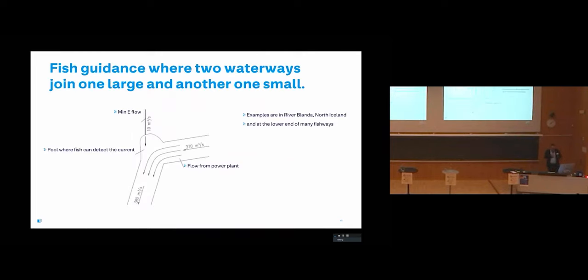Where two waterways are joining or meeting, one large and another small, we can have a problem for the fishes to find their way. But we solve that by taking a large pool where the fish can detect the current from the small flow. This has been done in another river in the north, River Blanda, and also below many of the Icelandic fishways.